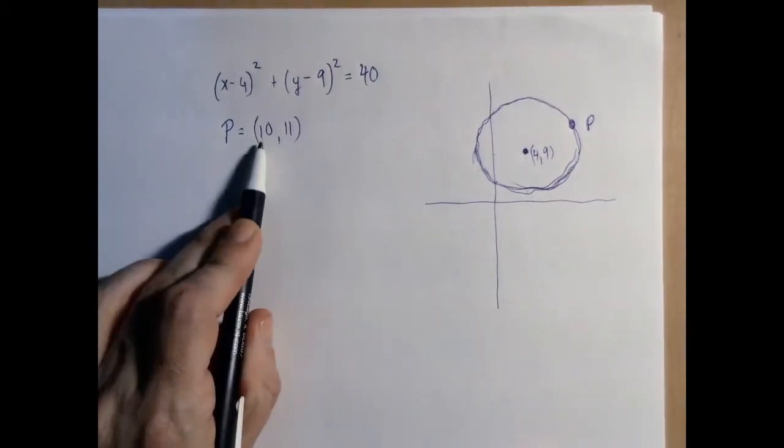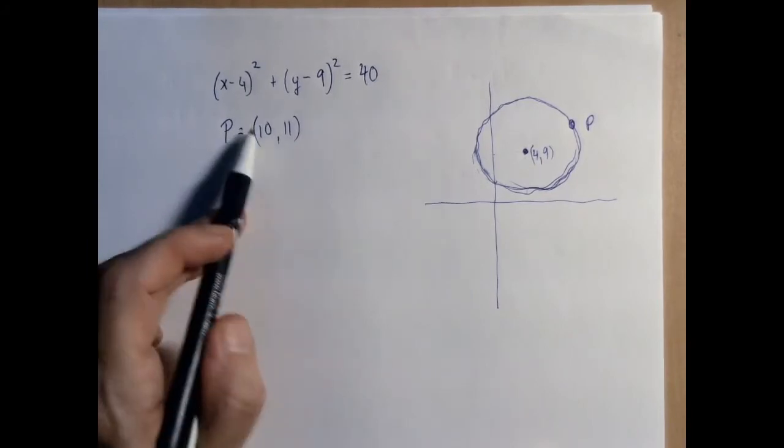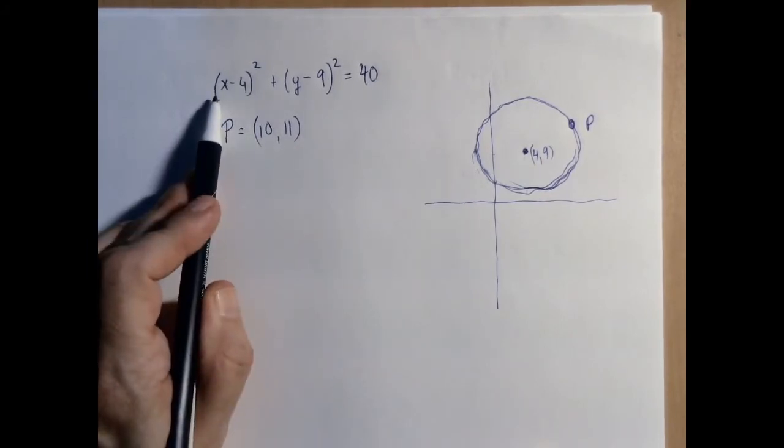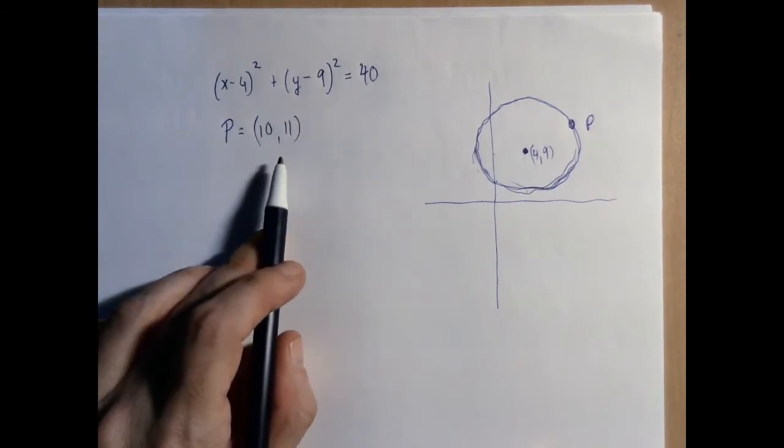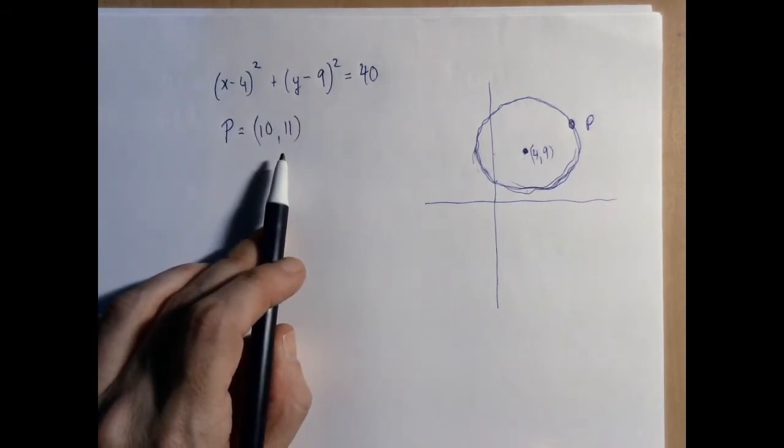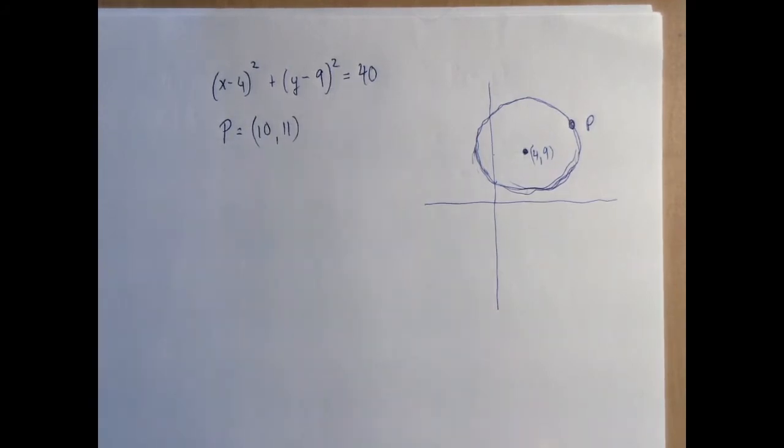We can and we should check. So if we substitute x equals 10 and y equals 11 into the equation of the circle, we get that 10 minus 4 is 6, 11 minus 9 is 2, and 6 squared plus 2 squared is 36 plus 4, that is 40. So this point indeed is on this circle.